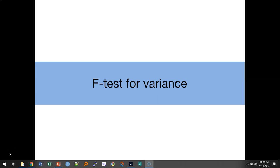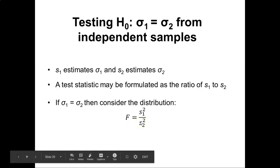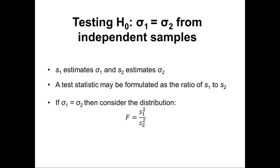Just like we can test whether or not two population means are different, we can also test whether or not two population variances are different. This is going to test our null hypothesis that the standard deviation from population 1 is equal to the standard deviation from population 2, and we can assume that these are independent samples.